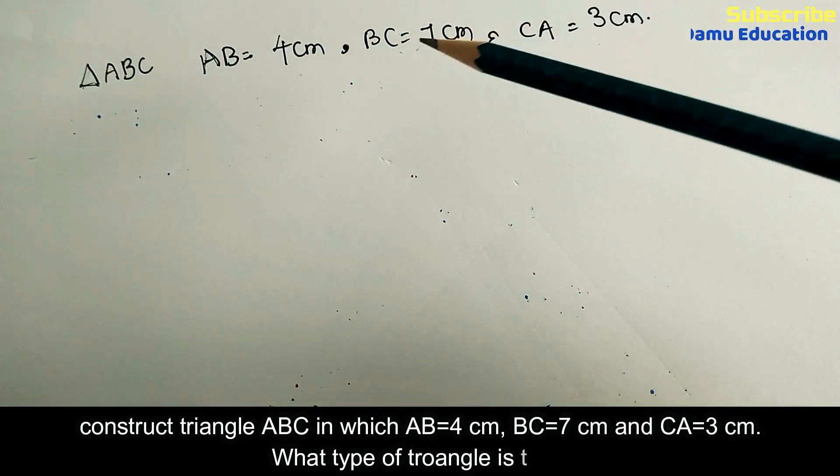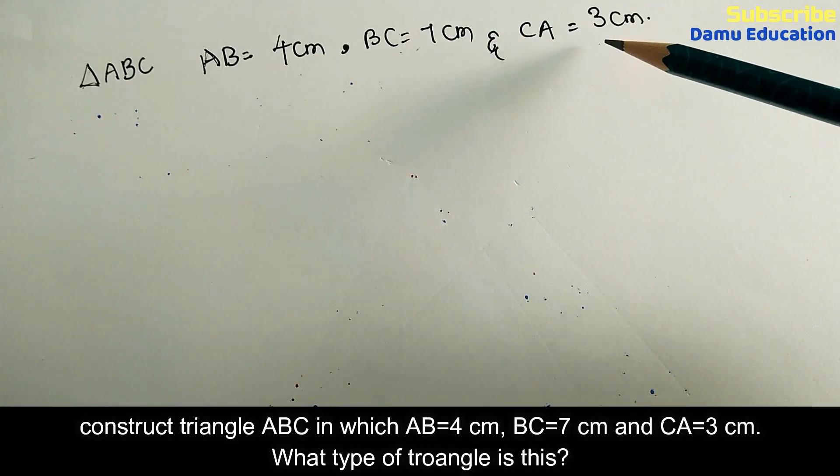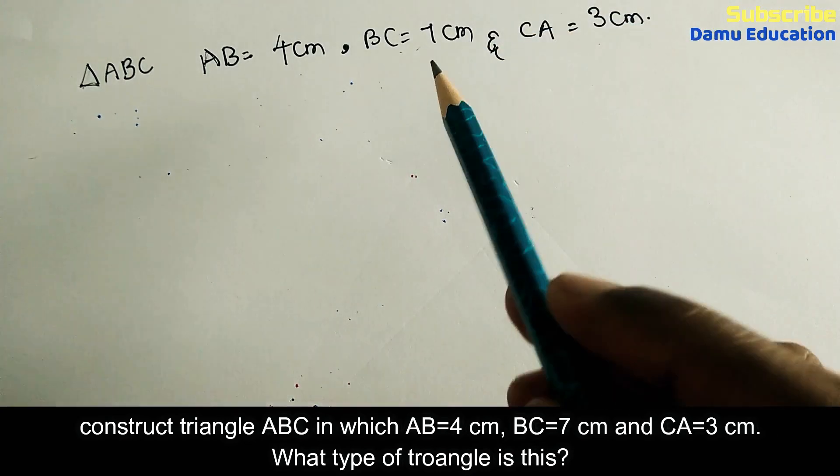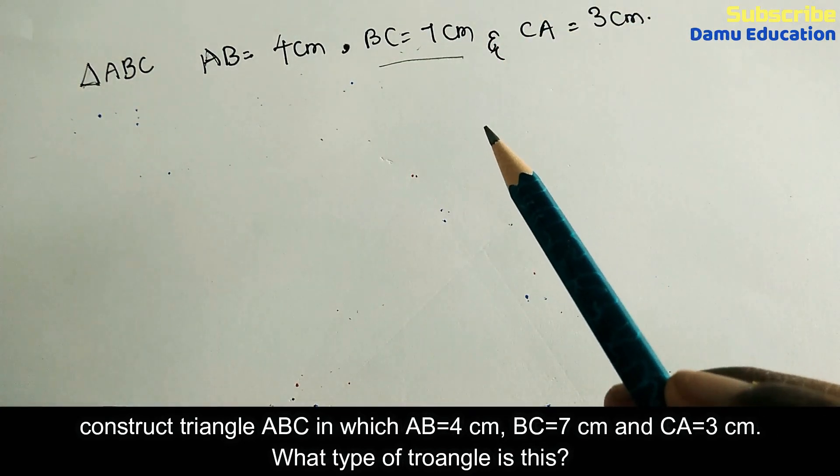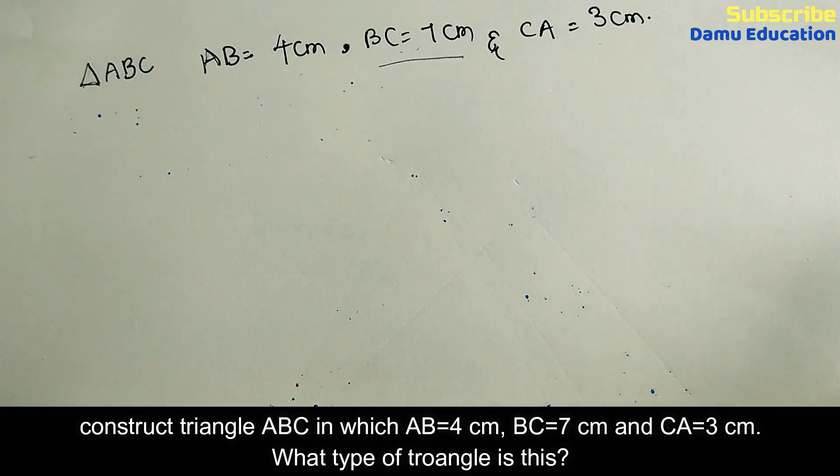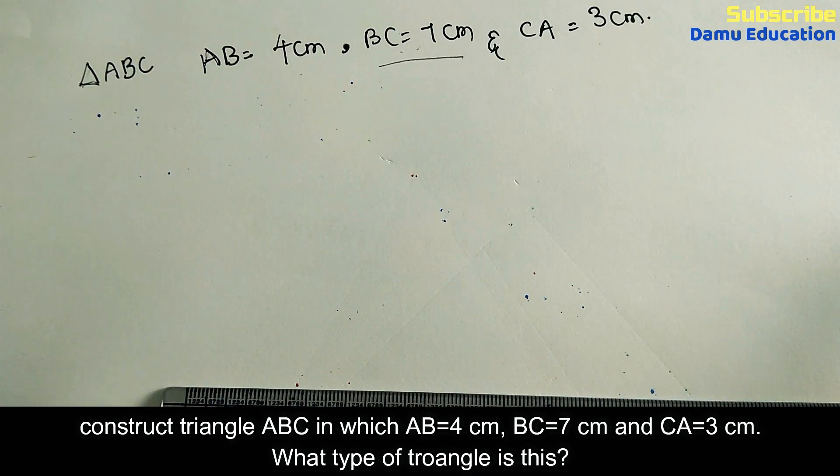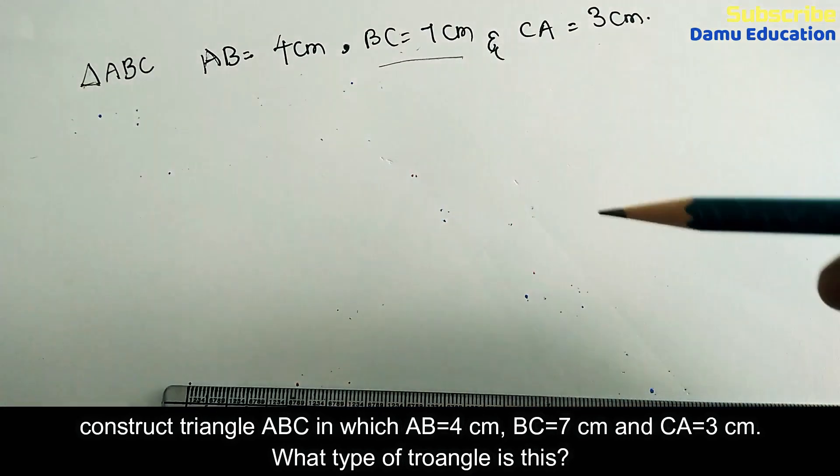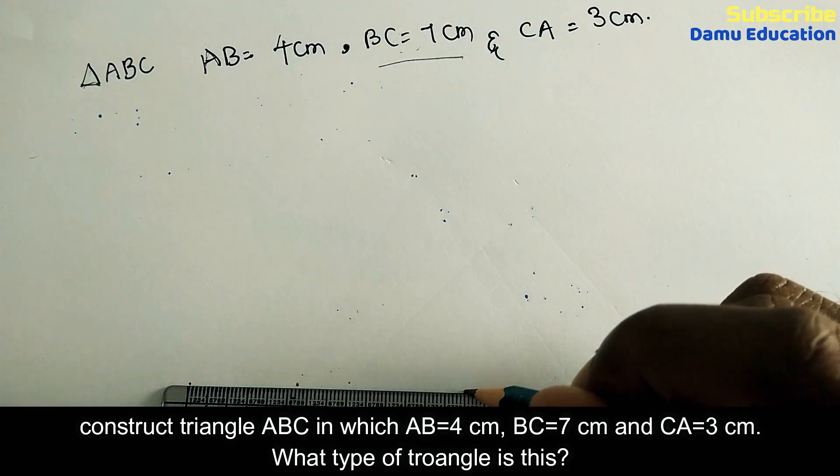Which measurement is larger? That one we should draw first. BC is 7 centimeters, so it's better to draw that one first. Place your scale horizontally and make marks at 0 and 7.